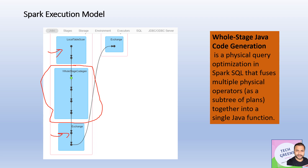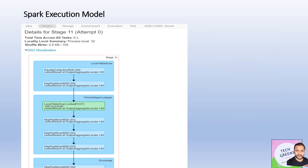That is what whole stage code gen does at a high level, and it came into the picture when we called the cache operation. The rest remains the same — it goes to the exchange for the next stage because we have a repartition, so one job is divided into two stages. Looking into the details of whole stage code gen on the Spark UI, we can see it reads the local table scan that is already cached, then creates map partitions and RDDs applying different aggregators to produce the final set of partitions to be exchanged and shuffled.